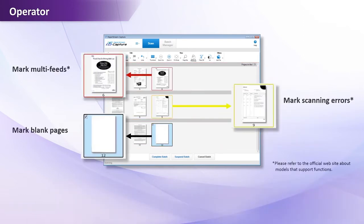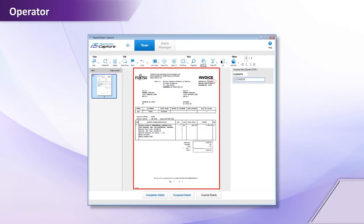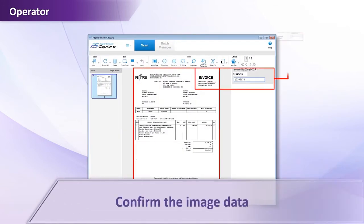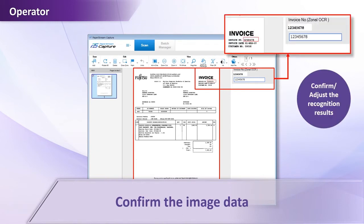Multi-feeding, scanning quality issues, and blank pages will be displayed with color frames for fast and easy quality assurance. When zonal OCR or barcode recognition are set, operators can confirm and adjust the image data and the recognition results in one dialogue.